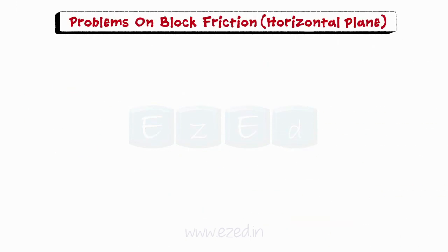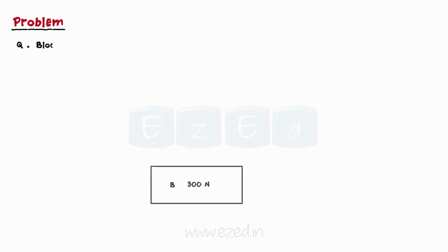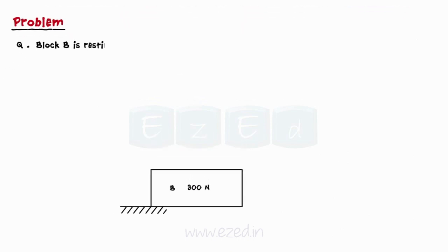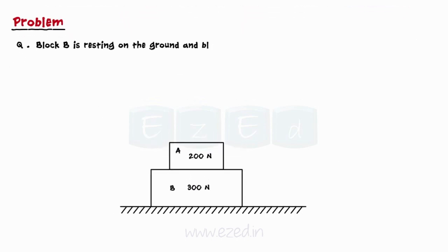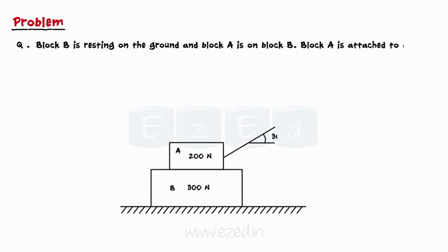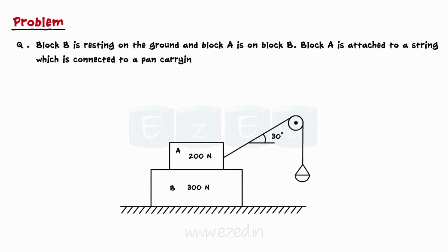Now let's take a look at the next problem. Block B is resting on the ground and block A is on block B. Block A is attached to a string which is connected to a pan carrying some weight P.